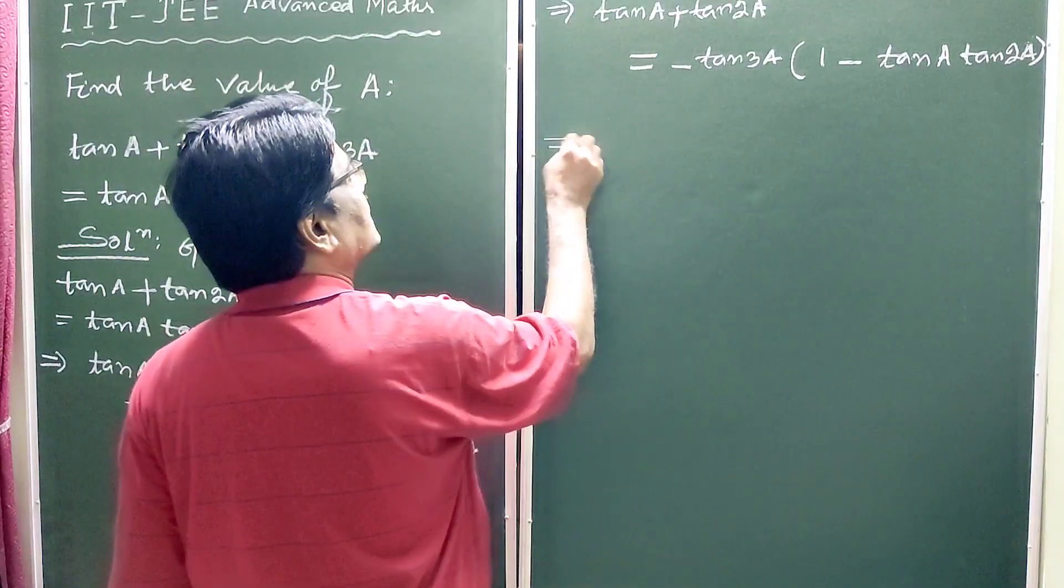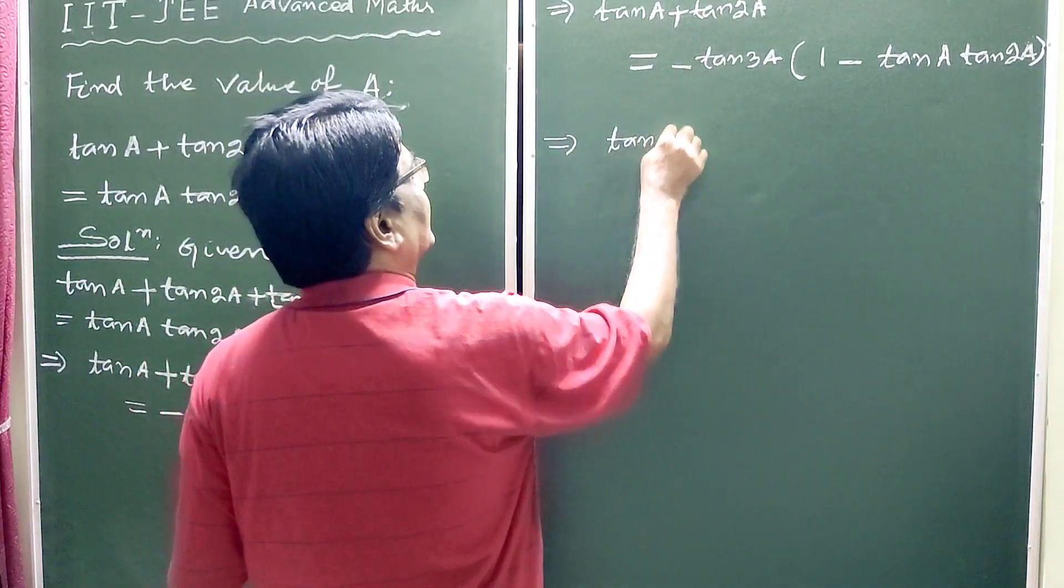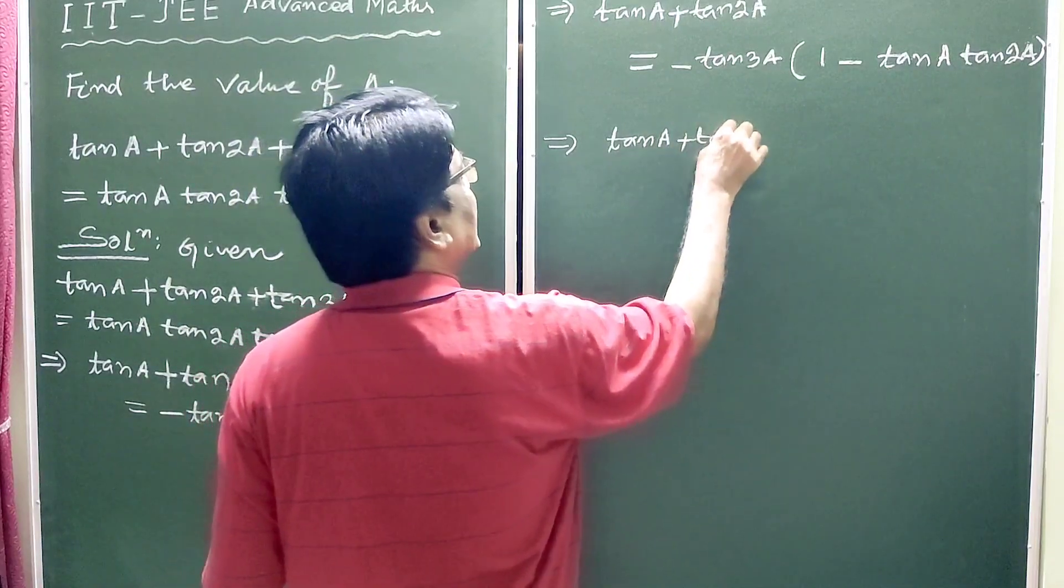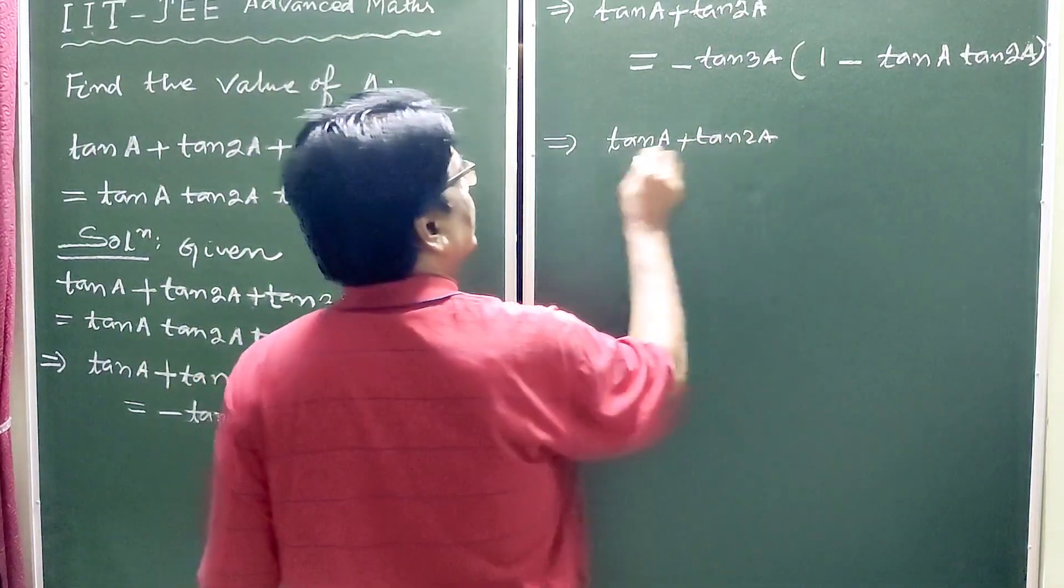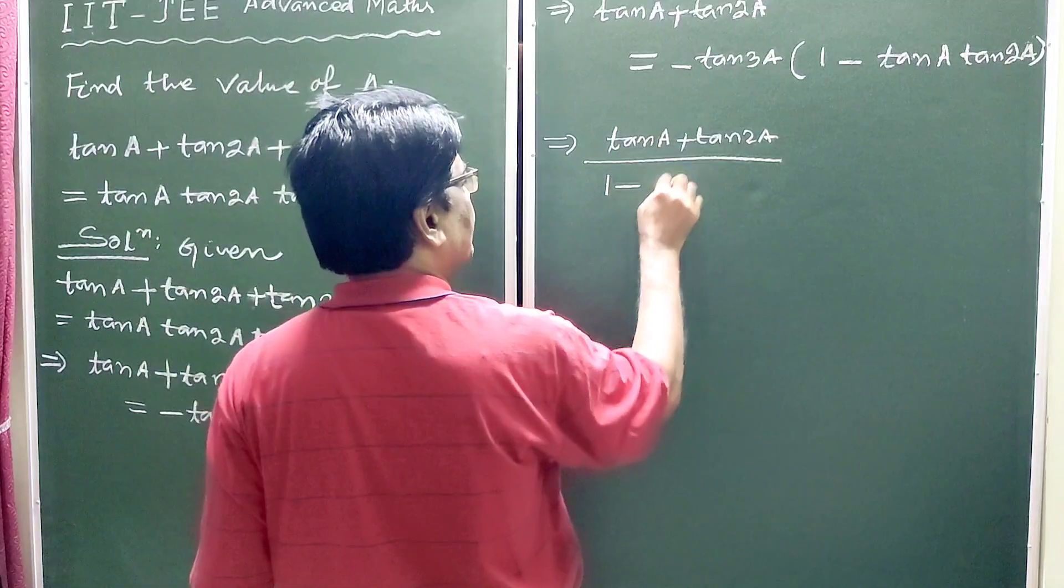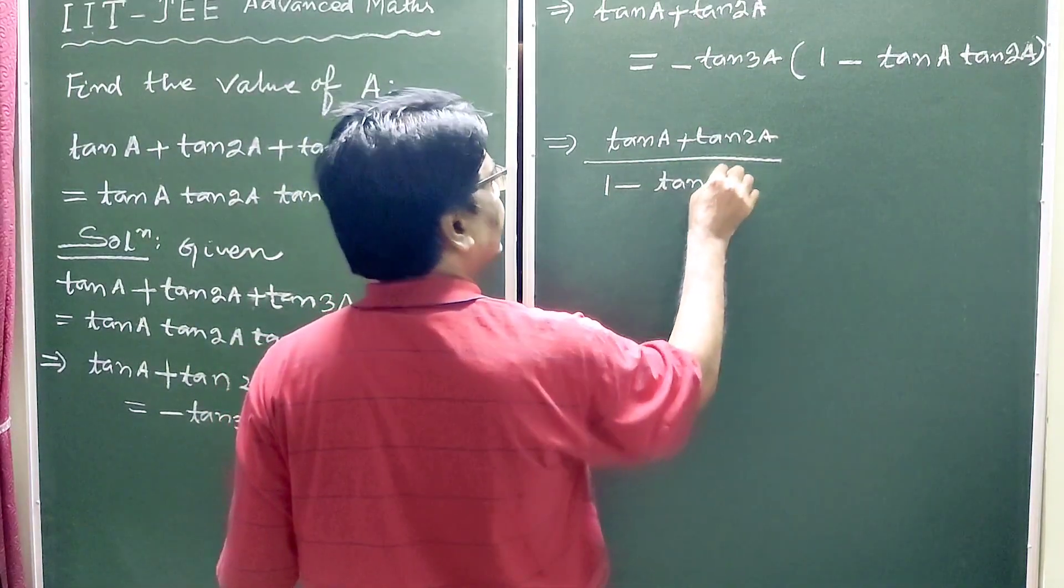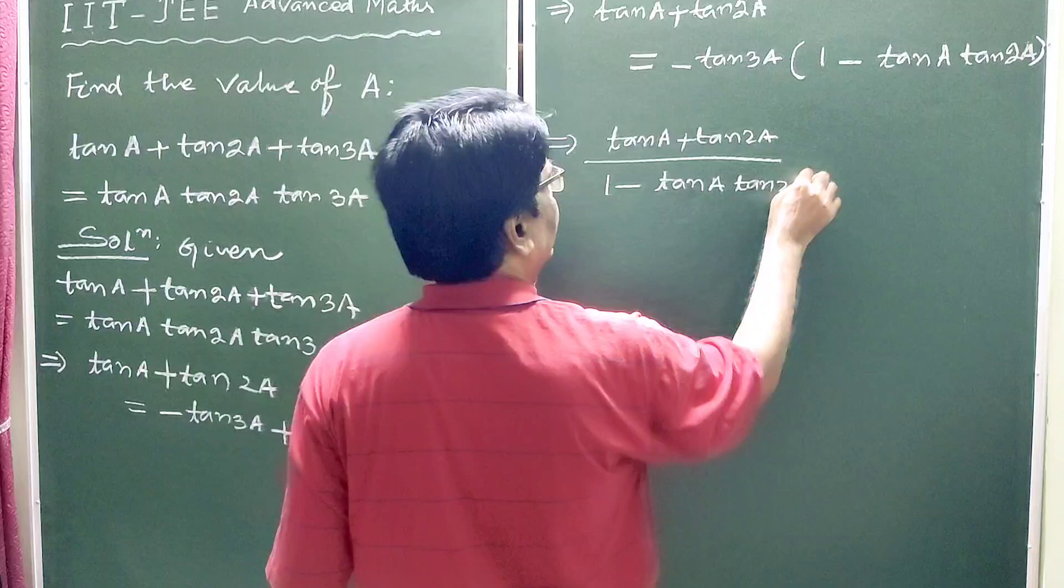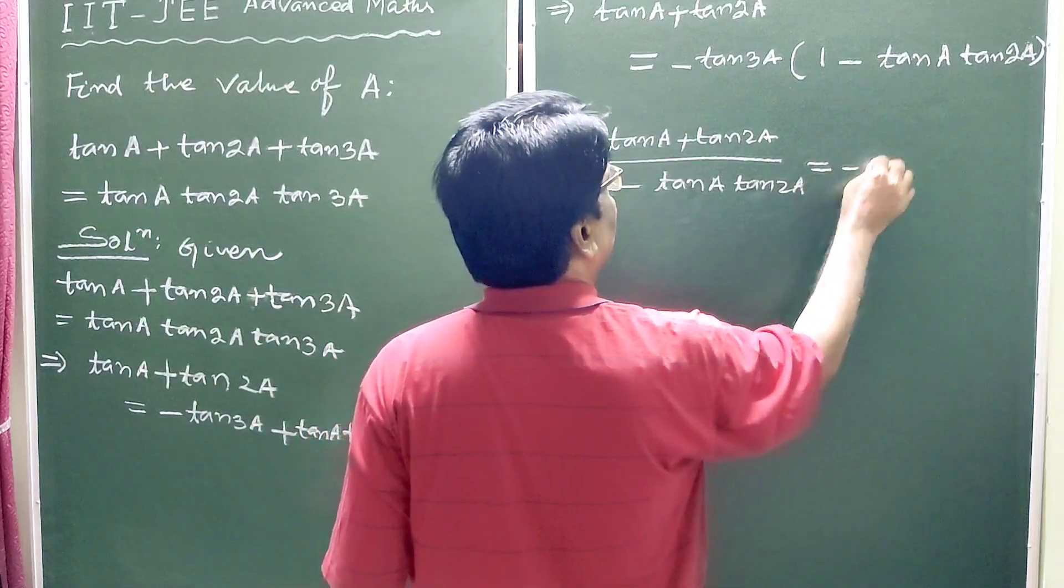This implies tan A plus tan 2A by 1 minus tan A tan 2A equals minus tan 3A.